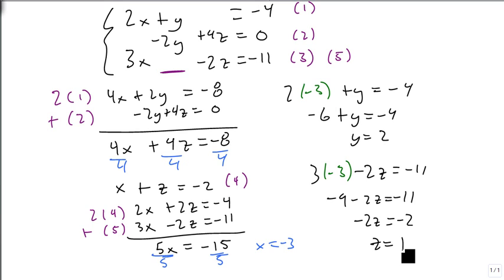And again, if we plug these in, we get minus 2 times 2 is minus 4. So I'm doing this one right here. Plus 4 equals 0. Sure enough, that works. So it works for all three equations. And our answer is the point minus 3, 2, 1.